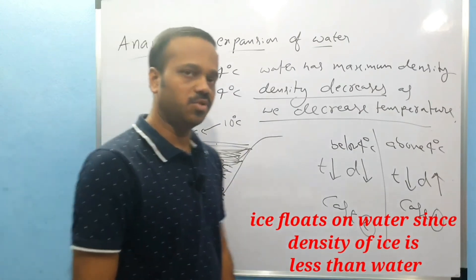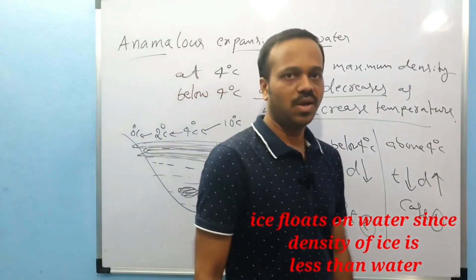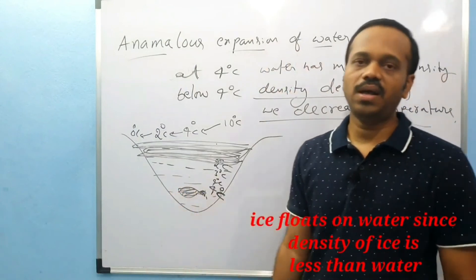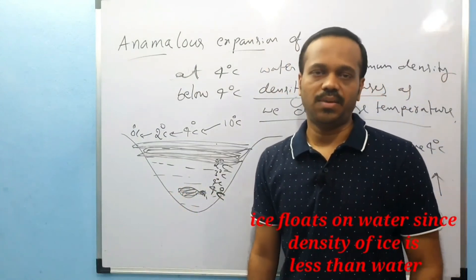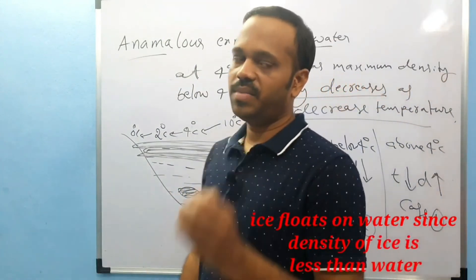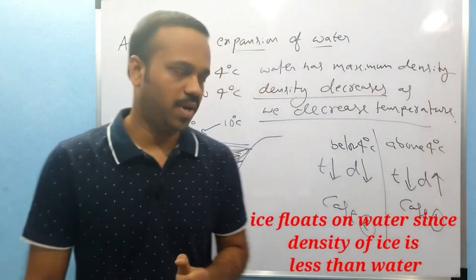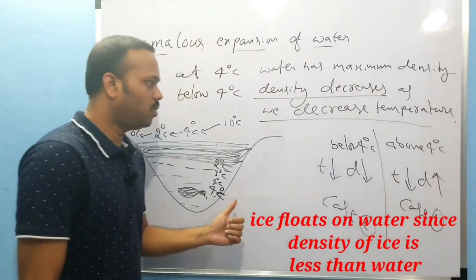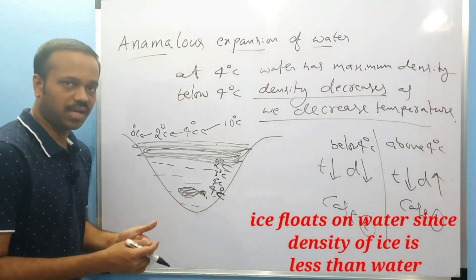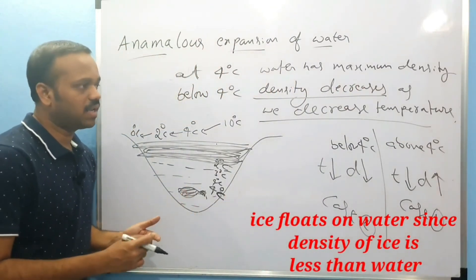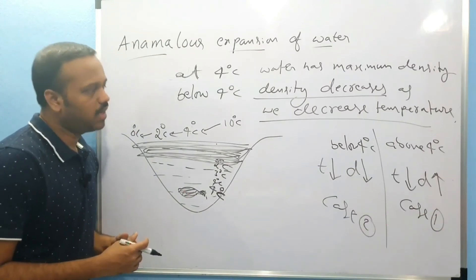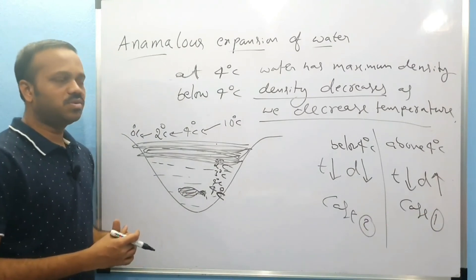Aquatic animals can survive. In 1 degree Celsius water, aquatic animals survive. So we can talk about aquatic life being preserved due to anomalous expansion of water. Why is this happening? There are many reasons — there are theories.